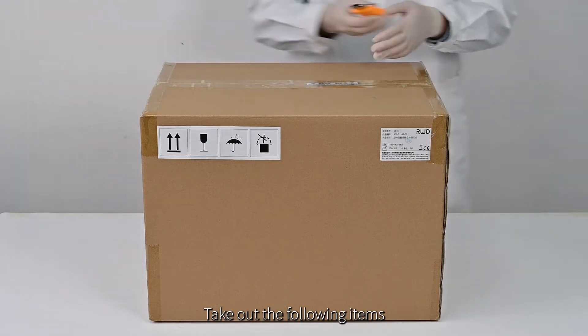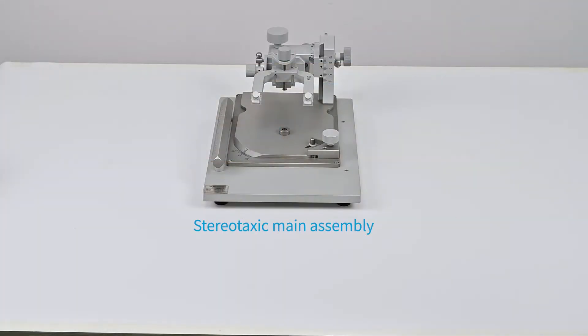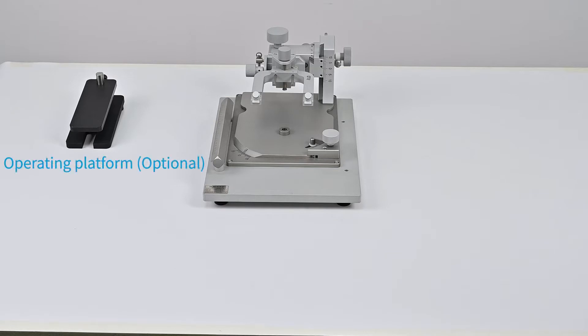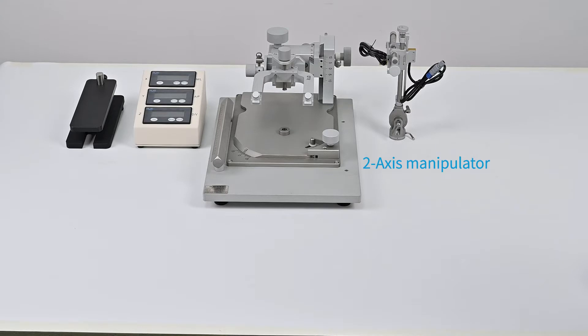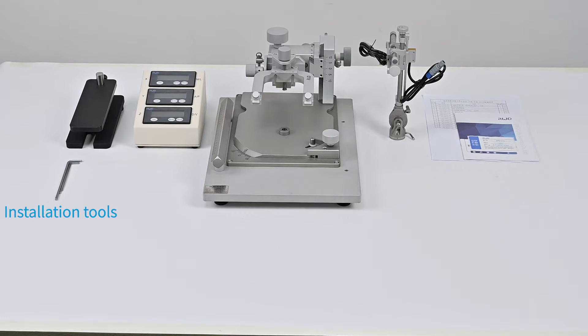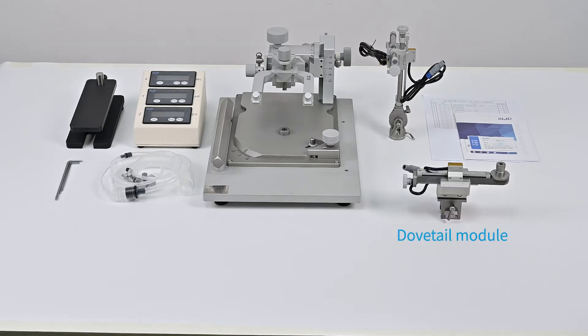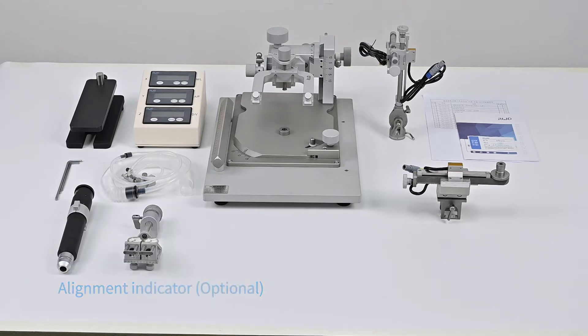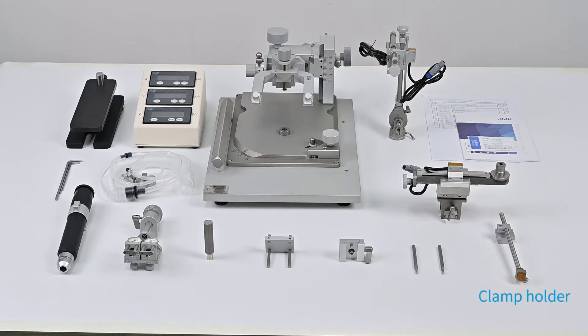Take out the following items: Stereotaxic Main Assembly, Operating Platform, Digital Readout, Two-axis Manipulator, User Manual, Manifest, Certificates, Installation Tools, Anesthesia Adaptor with Tubing, Dovetail Module, Centering Scope, Alignment Indicator, Center Height Gauge, 15-degree Angle Adapter, Lock Bot, Ear Bars, and Clamped Holder.